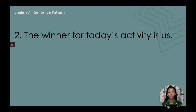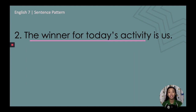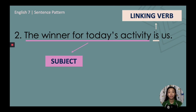Number 2: 'The winner for today's activity is us.' Pause this video as you try to identify the subject, linking verb, and complement. The subject is the noun phrase 'the winner for today's activity.' The linking verb is 'is.' And the complement is the pronoun 'us.'